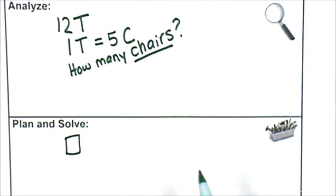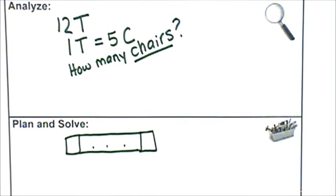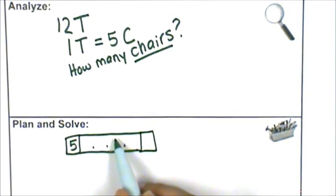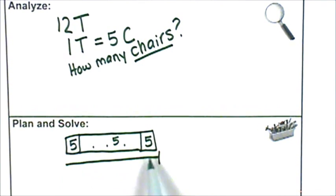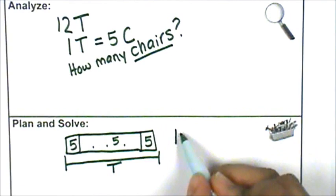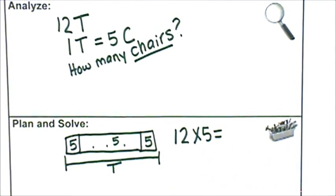So here's one table. I don't want to draw all of my tables, so I'll just put an ellipsis — there are my 12 tables. Here's table 1 with 5 chairs. All of these have 5 chairs, and table 12 has 5 chairs. So I can add 5 plus 5 plus 5... or I can just say 12 tables times 5 chairs, and I know that's 60.